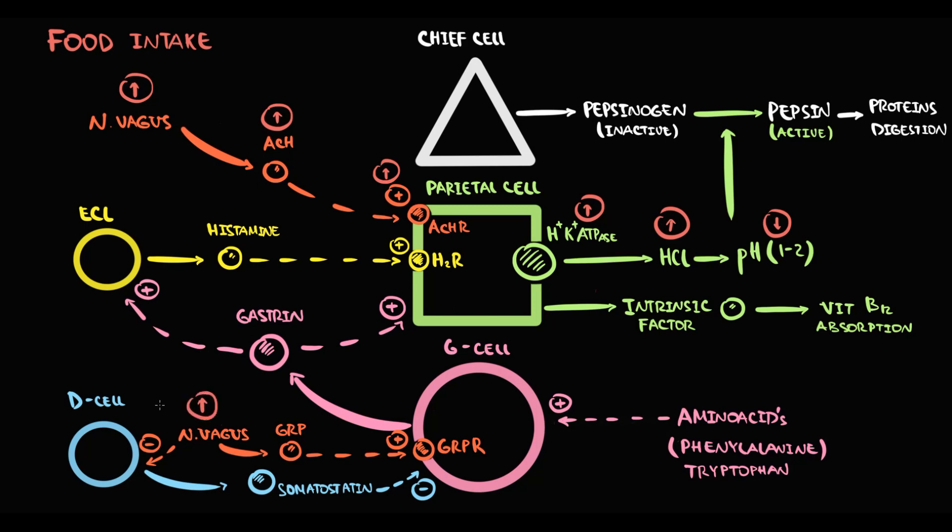The vagus nerve also inhibits D cells, thereby decreasing the production of somatostatin. Decreasing somatostatin disinhibits the function of G cells. In addition to this, the vagus nerve produces gastrin-releasing peptide that stimulates G cells.